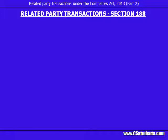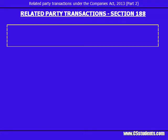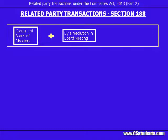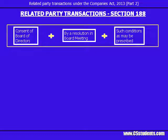Section 188 of the Companies Act 2013 regulates the related party transactions. But before we discuss the section, please note that the Act only regulates certain related party transactions. The list of those transactions has been given in Section 188. If some transaction is not mentioned in the list of Section 188, then that related party transaction shall not be regulated by this section. Section 188 Subsection 1 states: only with the consent of the Board of Directors, by a resolution at a meeting of the Board, and subject to such conditions as may be prescribed, a company can enter into any of the following contracts or arrangements with a related party.